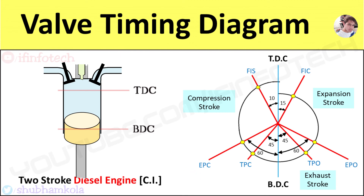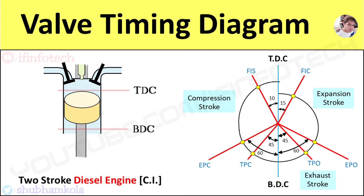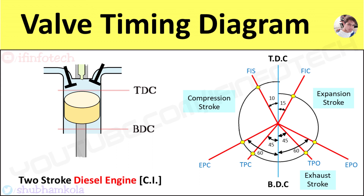This is done to draw fresh air through the transfer port and exhaust burned gases through the exhaust port. The compression process starts when the piston moves from BDC to TDC. The pressure inside the compression chamber increases due to the start of the compression stroke, and the cycle starts again by opening the inlet port at an angle of 10 degrees before TDC position of piston. Thank you.